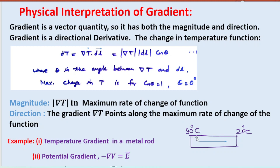As an example, consider a metal rod where one end is at 90°C and the other end is at 20°C. The temperature gradient direction is from higher temperature to lower temperature, i.e., from 90° to 20°. Similarly, the potential gradient tells about the electric field: E = −∇V.